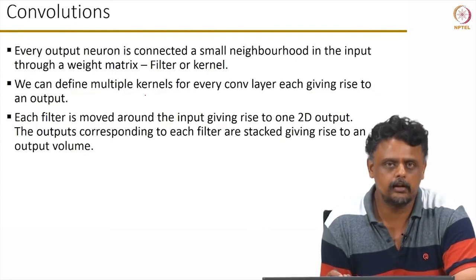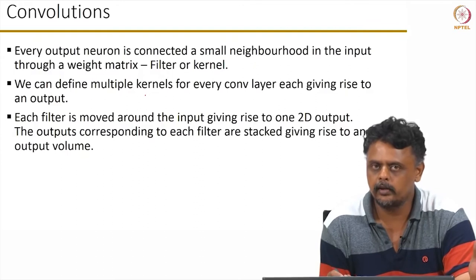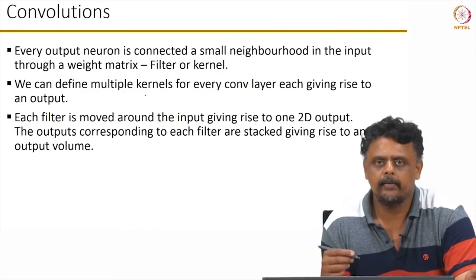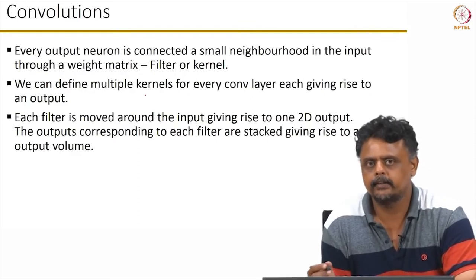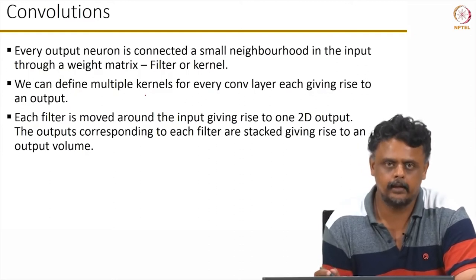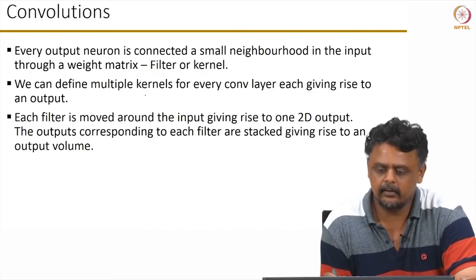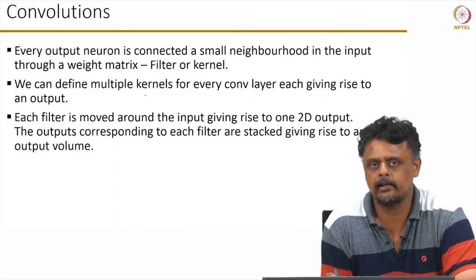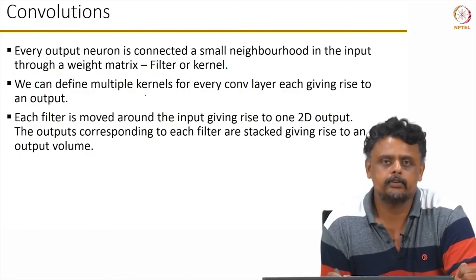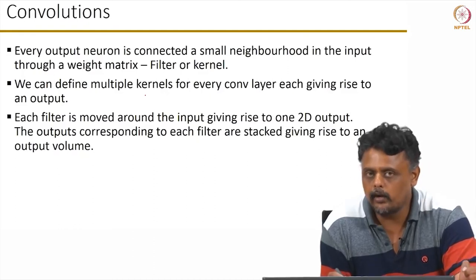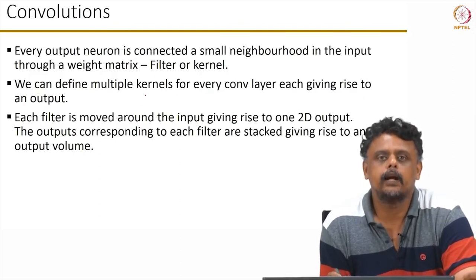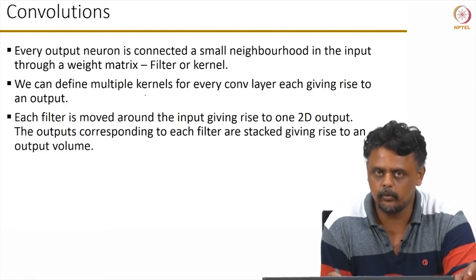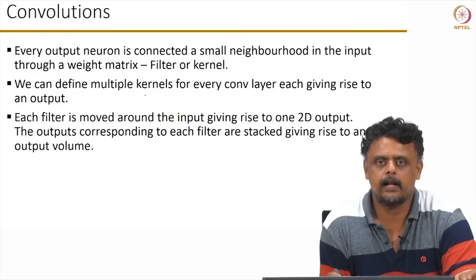What does convolution accomplish? Like the ANN, the CNN has an input layer followed by hidden layers and then output. The output neuron in any layer is connected to a small neighbourhood in the input — that is what the convolutional kernel accomplishes. The connection is through a weight matrix called the filter or kernel. For every convolutional layer, we define multiple filter kernels, moving each kernel around the image and at every position multiplying with the underlying pixel values and adding them up.